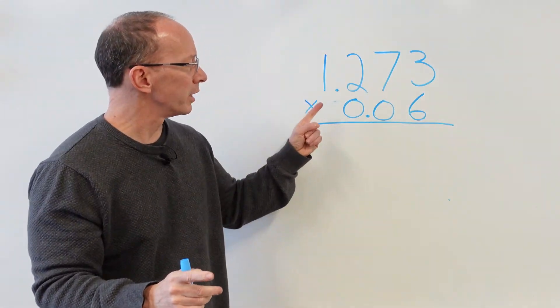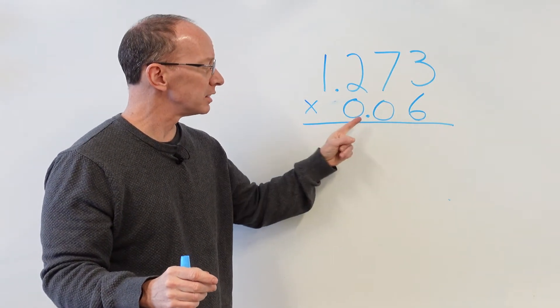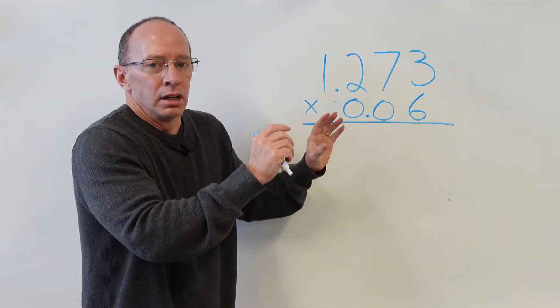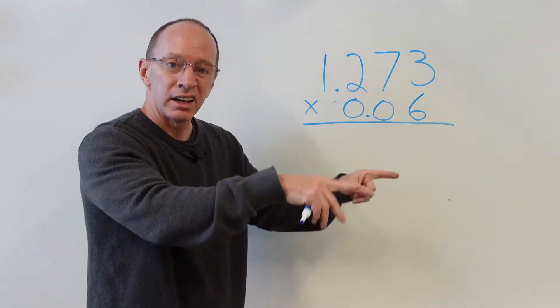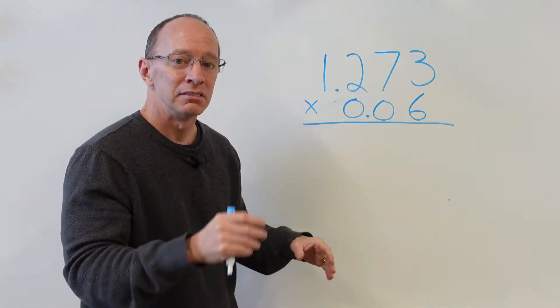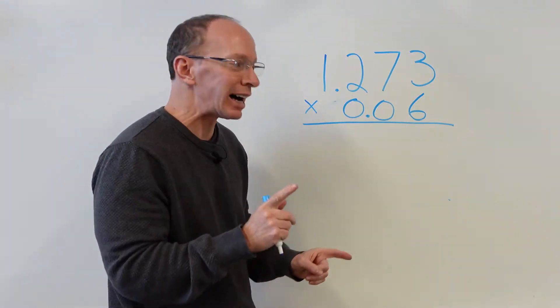Here we have 1.273 times 0.06. So, once again, don't get worried about where the decimal point is. We do that later on. We multiply this like we would a whole number. Remember, take it easy, cheesy, lemon, squeezy, step by step.